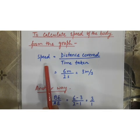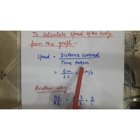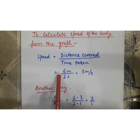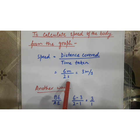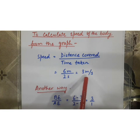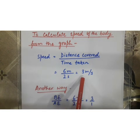To calculate the speed of the body from the graph, speed is equal to distance covered upon time taken. So, from the graph, we can take that 6 m is the distance covered in 2 seconds time. Now, if we are going to divide that, we will get the answer to be 3 m per second. So, that will be the speed of the body.